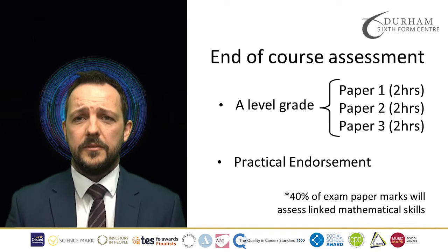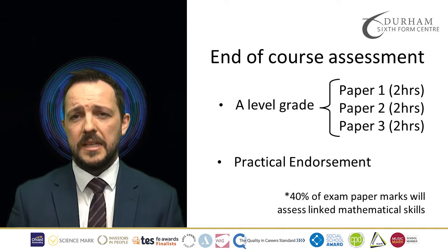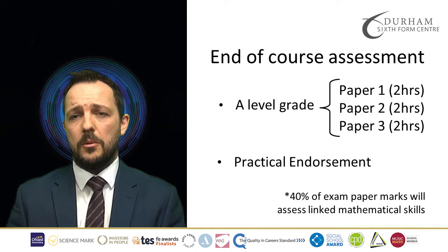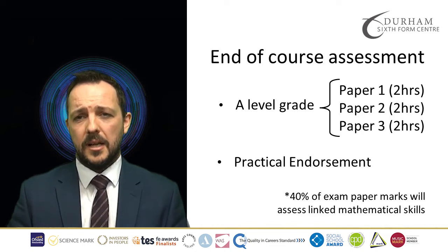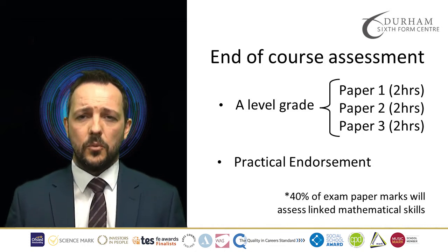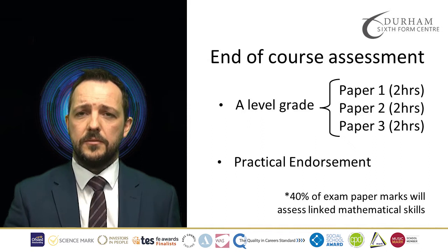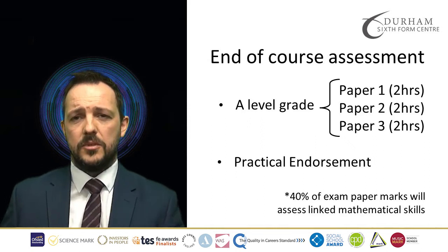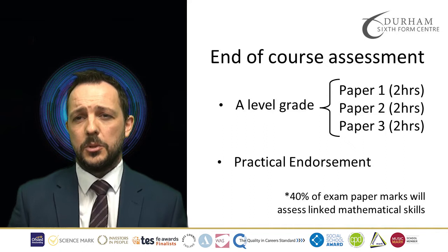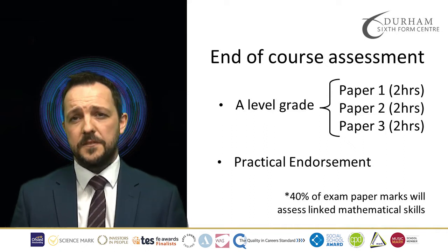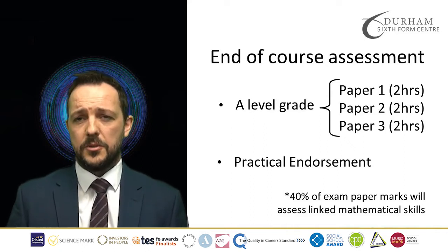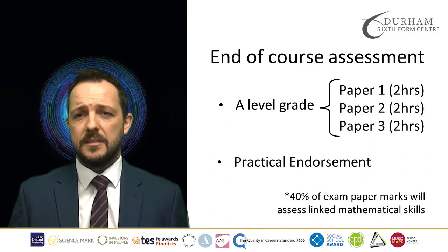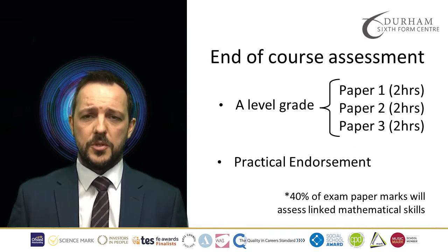The assessment for the qualification is at the end of the course and constitutes three two-hour long exam papers, and those exam papers will dictate your grade for the A Level. Alongside that will sit something called a practical endorsement, which is either a pass or fail in the practical endorsement and is an assessment of the practical skills and abilities that you've built up over those two years.